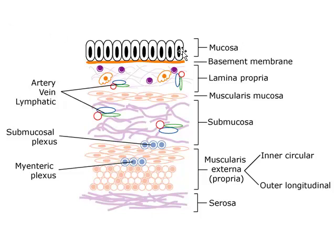The innermost layer of the tube, which faces the lumen, is made up of a mucosa. The mucosa in turn is made up of an epithelium and a basement membrane. Throughout much of the tract, the epithelium is a simple columnar epithelium, but there are some variations.